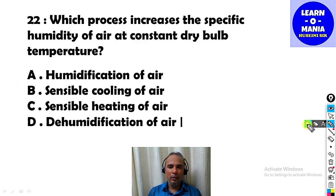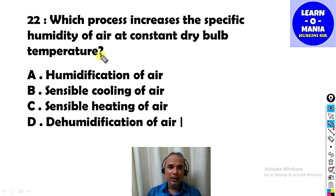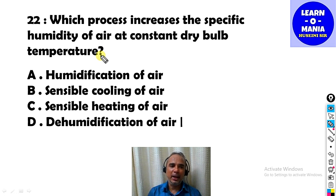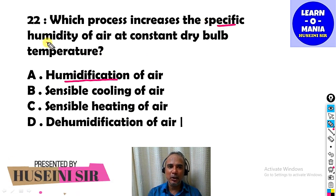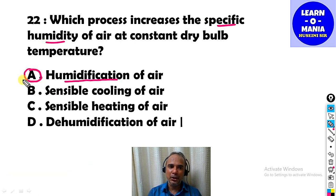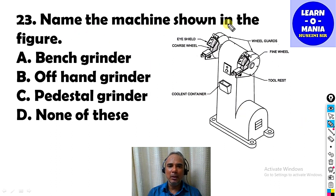Our next MCQ: Which process increases the specific humidity of air at constant dry bulb temperature? This process is called humidification. In humidification, we add humidity without changing the temperature, so specific humidity increases. The answer is option A — humidification.